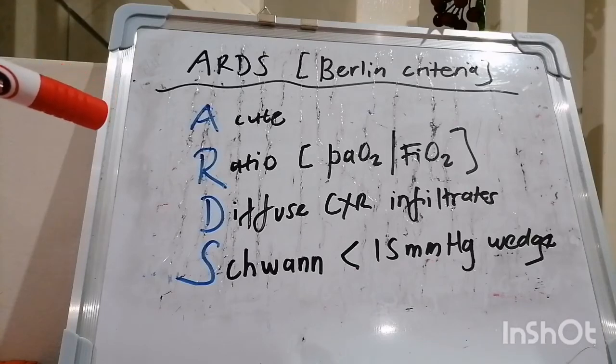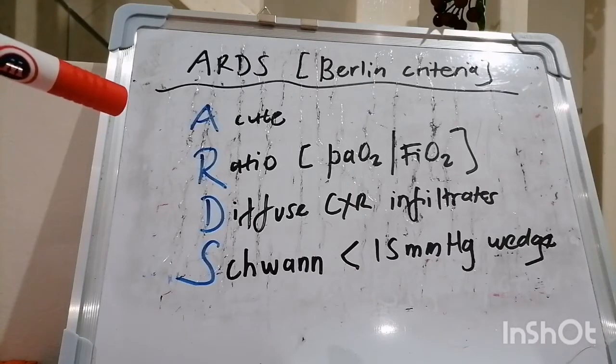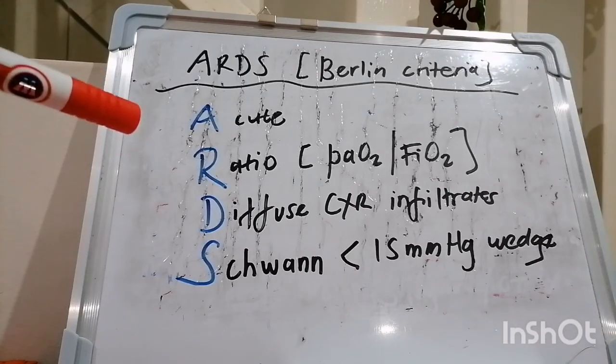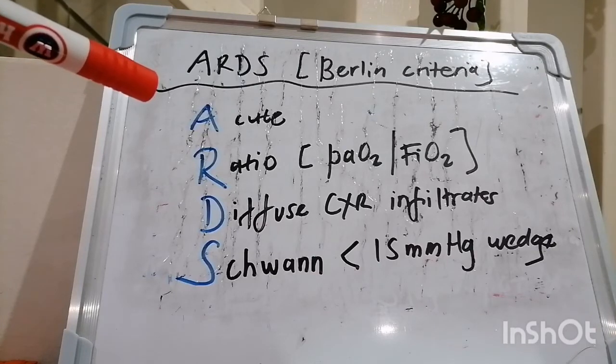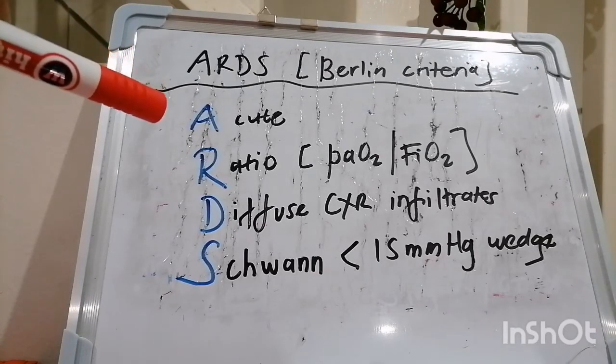D stands for diffuse chest x-ray infiltrates, in other words, bilateral alveolar infiltrates, which usually tends to be asymmetric or patchy and peripheral more than central.